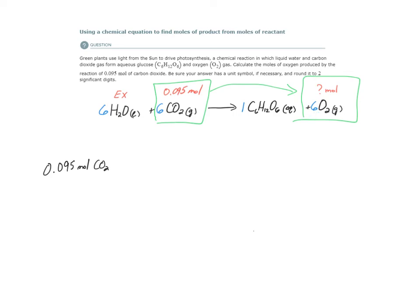The mole ratios from the coefficients in the balanced chemical equation. Here's how I place the mole ratios as a conversion factor. If I'm converting from CO2 to O2, then I need to use these coefficients in my mole ratio. Six moles of CO2 are consumed to produce six moles of O2.